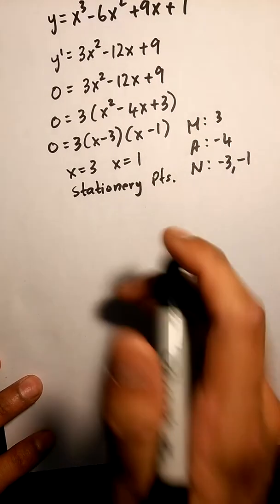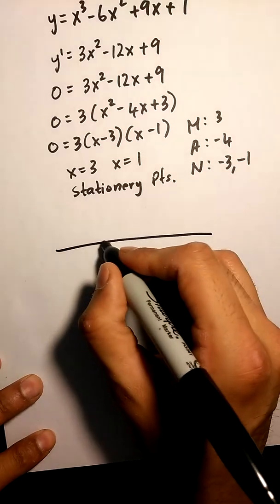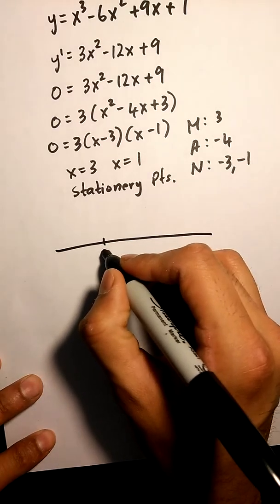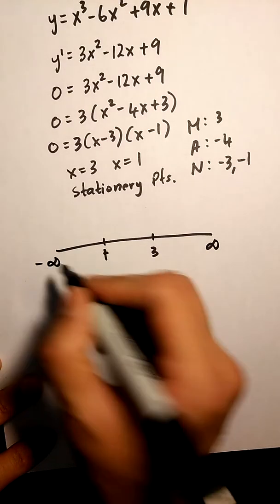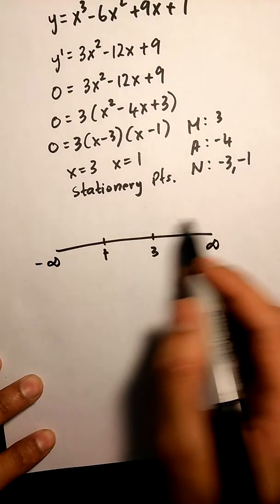Once we get our stationary points, remember we put them on our number line and we test out each range.